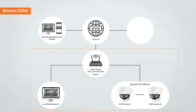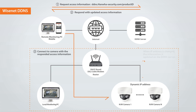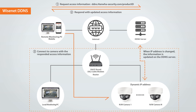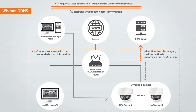Wisenet DDNS is a service that converts the dynamic IP address of a camera into a DDNS URL, so that users can easily access the camera when using an external remote PC or mobile. Once you register the camera on the DDNS server, users can easily access the camera with the DDNS URL without having to know the changed IP address.